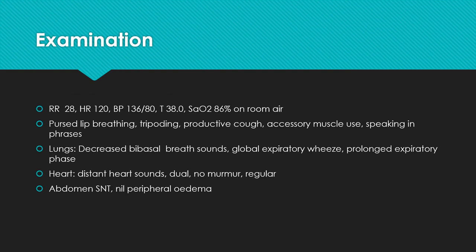On examination, her respiratory rate is up at 28, she's tachycardic, blood pressure is still good, she has a little fever at 38, and her sats are 86% on room air. You notice pursed lip breathing, tripoding, she's only speaking in phrases, and she's using accessory muscles — she is in respiratory distress. On auscultation you can hear decreased breath sounds bilaterally, a global expiratory wheeze, a prolonged expiratory phase, and muffled heart sounds with no murmur. Abdomen is normal and there's no peripheral oedema.